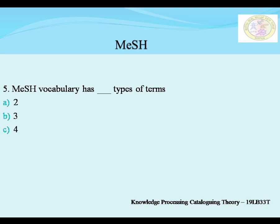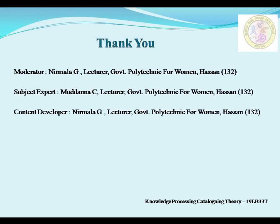If you have any doubts you can ask. So we have now covered the Sears List of Subject Headings, the Library of Congress Subject Headings, chain procedure or chain indexing, and now MeSH — Medical Subject Headings — which is purely based on medical science and life sciences. MeSH is an example of a listed subject heading, but based on medical and life sciences. If you have any doubts girls, we shall wind up the session. Thank you, have a nice day, bye.